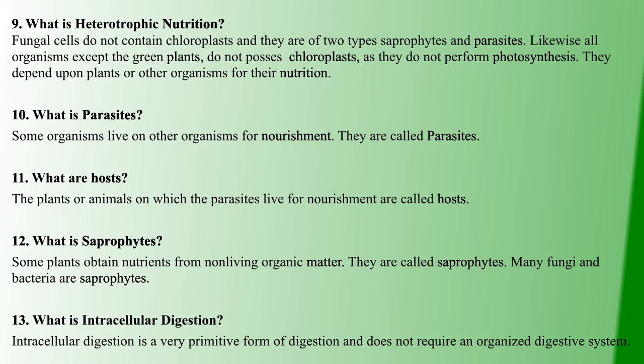Heterotrophic nutrition is the opposite of autotrophic nutrition. For example, fungal cells lack chloroplasts, so they follow heterotrophic nutrition. Heterotrophic nutrition is classified into two types: saprophytes and parasites. All organisms that cannot make their own food follow heterotrophic nutrition.